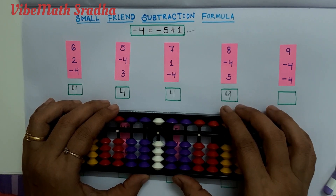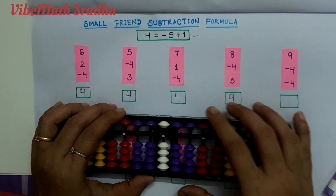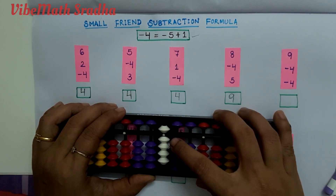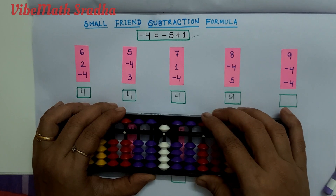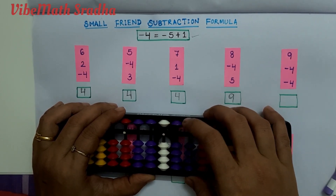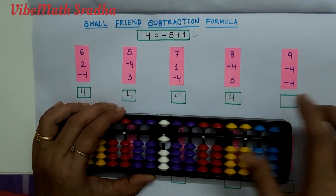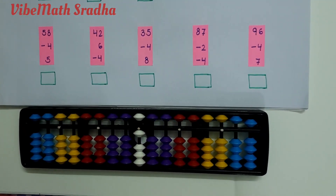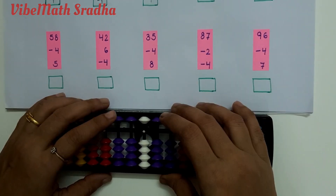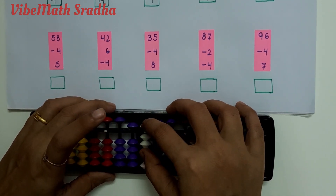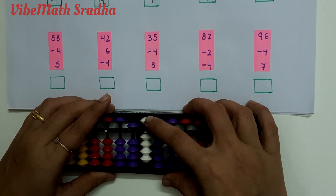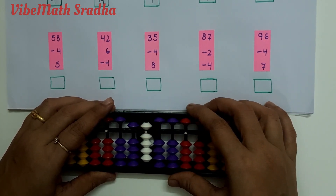Fifth example is 9 minus 4 minus 4 minus 4. 9 minus 4 — we can directly subtract 4 here. Then minus 4 again, applying minus 5 plus 1. Answer is 1. Coming to the next example: 58 minus 4 plus 5. 58 minus 4 is minus 5 plus 1, plus 5. Answer is 59.